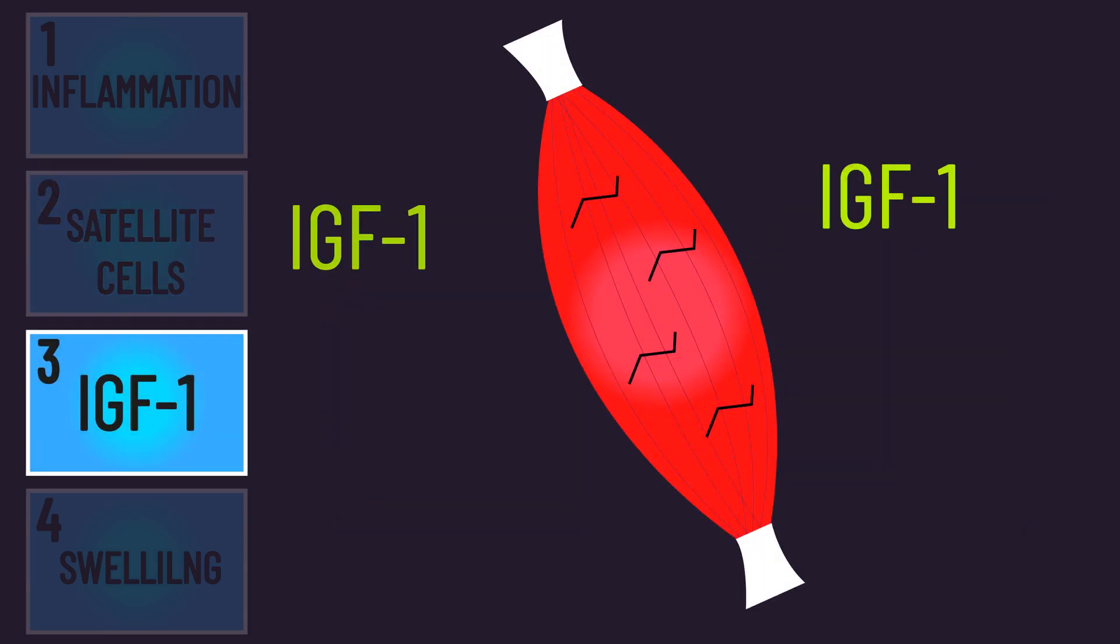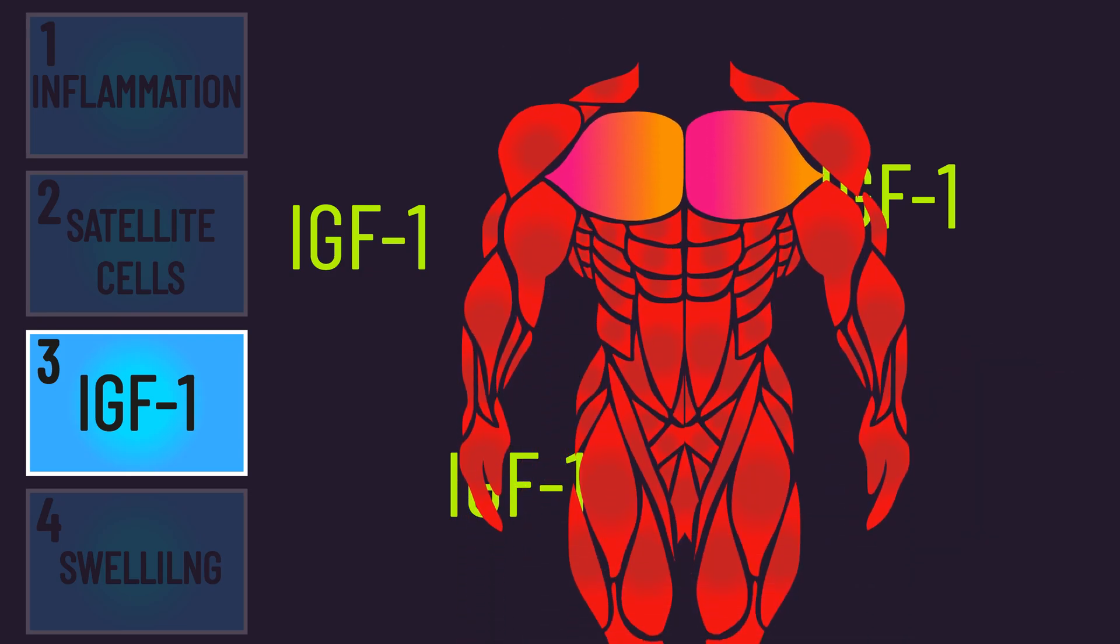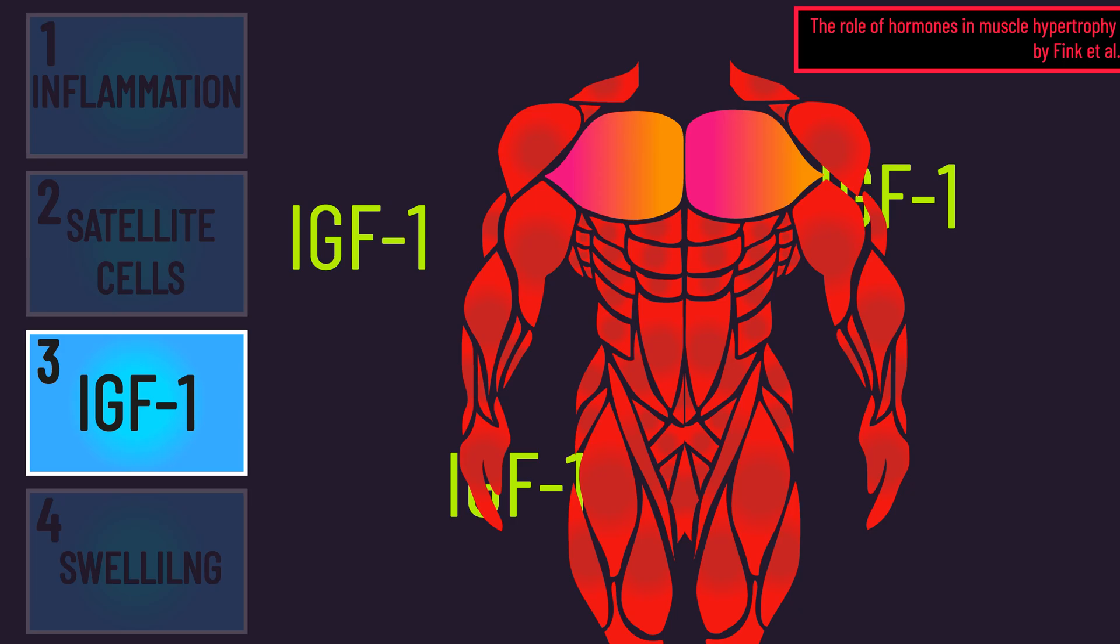As for IGF-1 production, not all studies have actually found damage is associated with greater IGF-1 production, and as discussed in the metabolic stress section, several studies indicate temporary increases in anabolic hormones with training do not correlate with long-term hypertrophy.